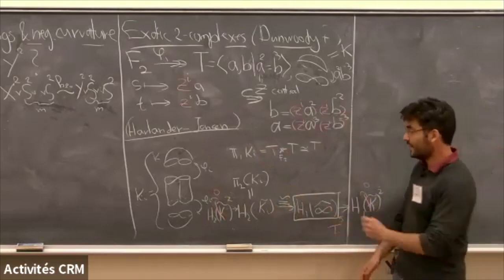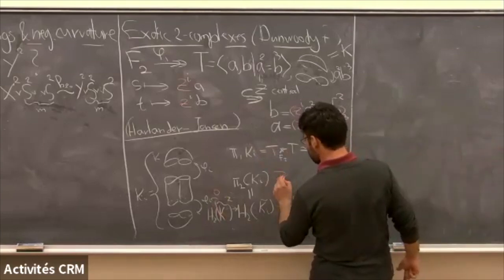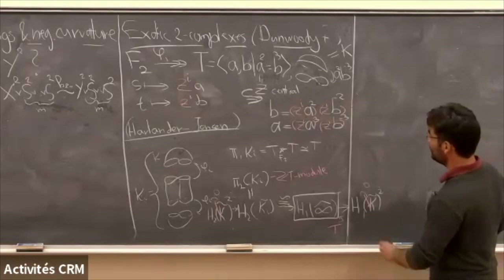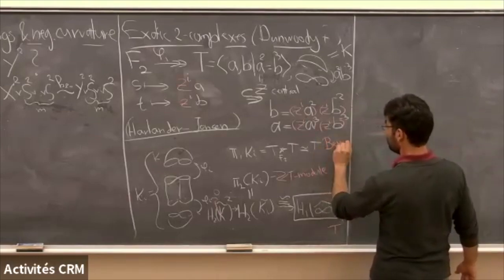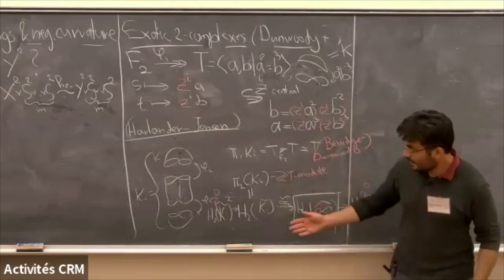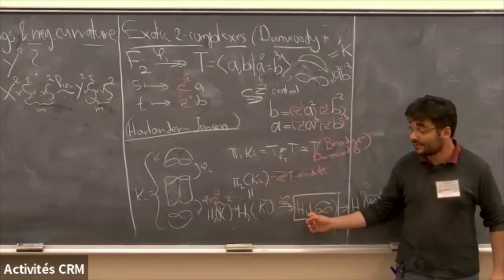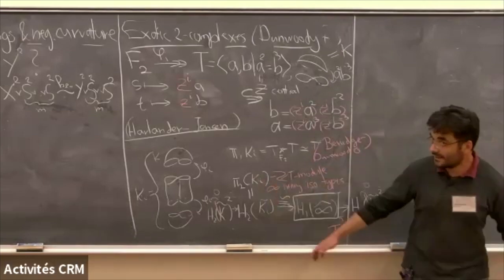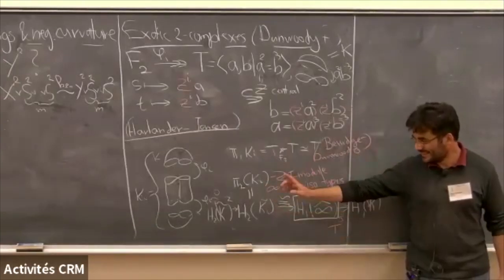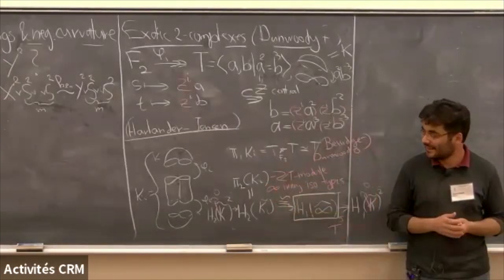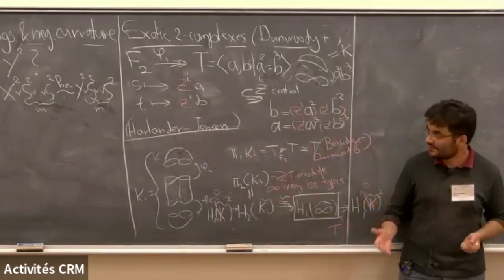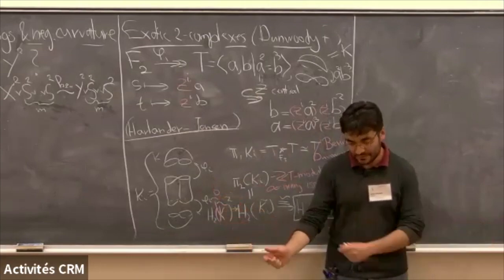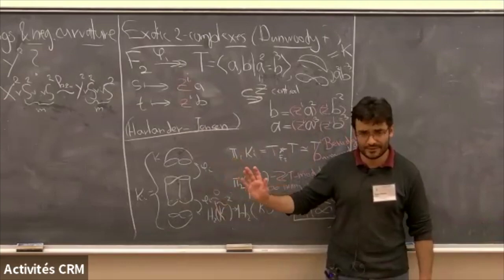This is a module, and it's a non-obvious computation due to Barrett and Dunwoody. They show that among these different modules, there are infinitely many non-isomorphic types. So infinitely many of these complexes K_i are not homotopy equivalent. They all have the same fundamental group, same Euler characteristic, but infinitely many are not homotopy equivalent. It turns out that after you wedge on a single two-sphere, they all become the same.